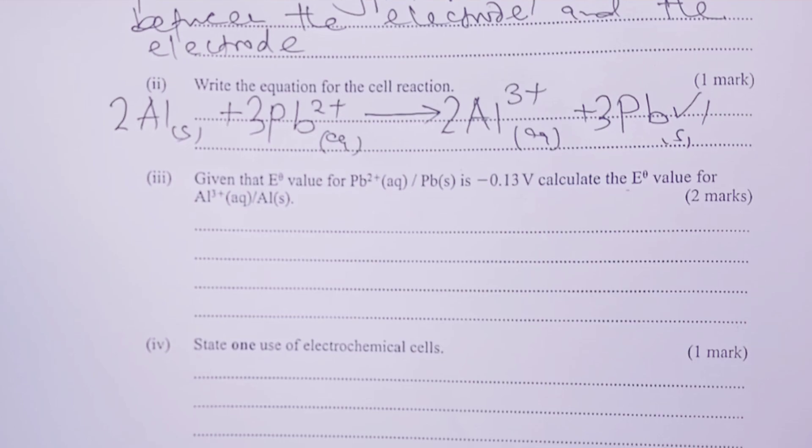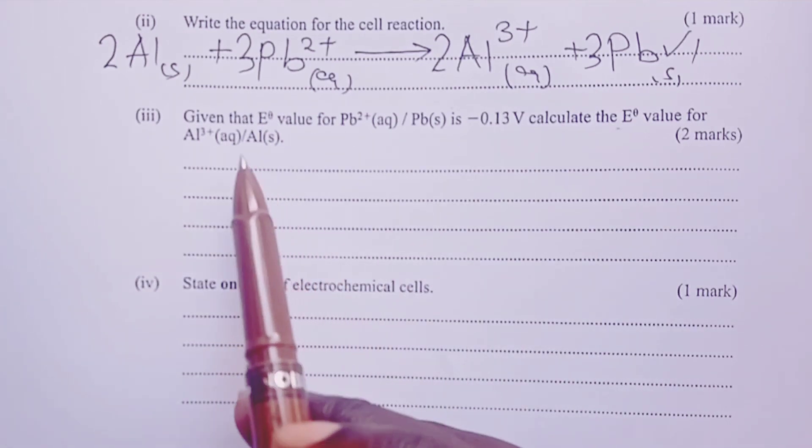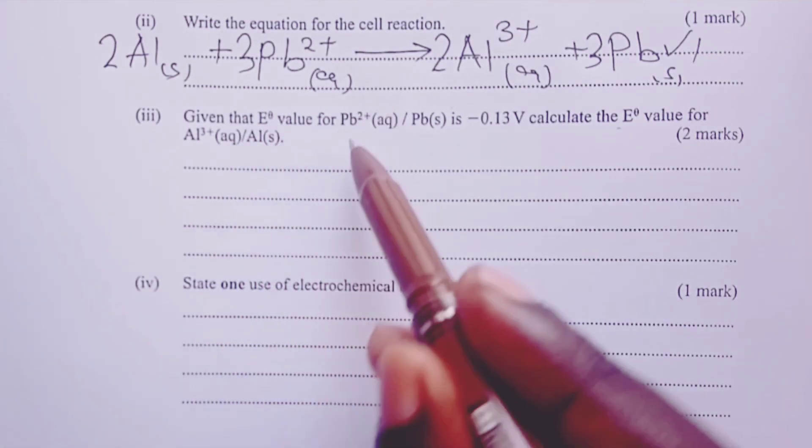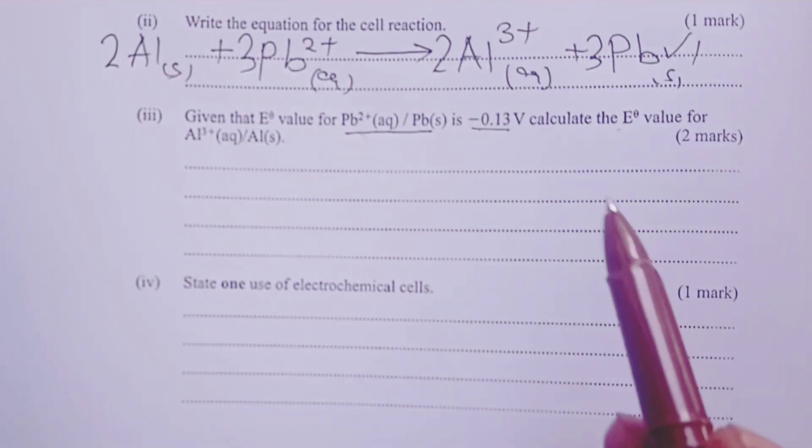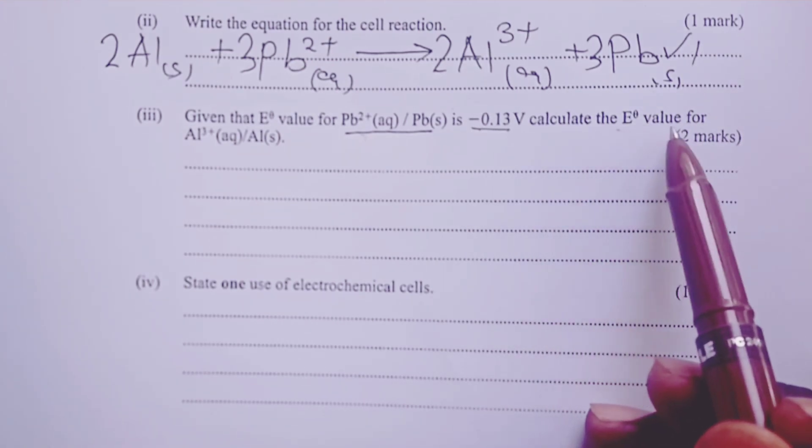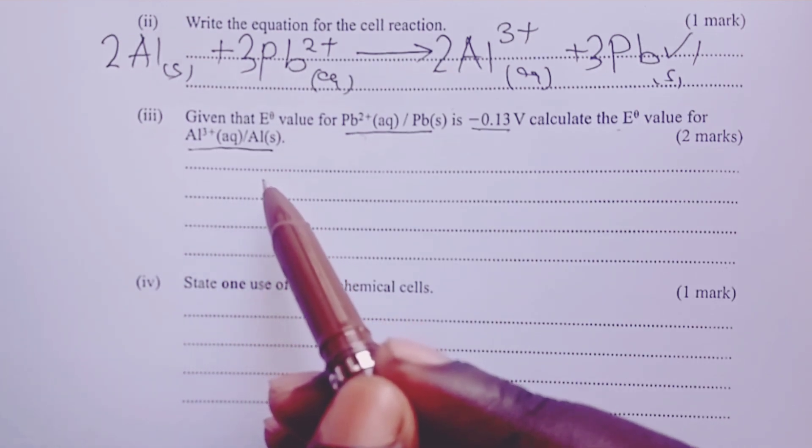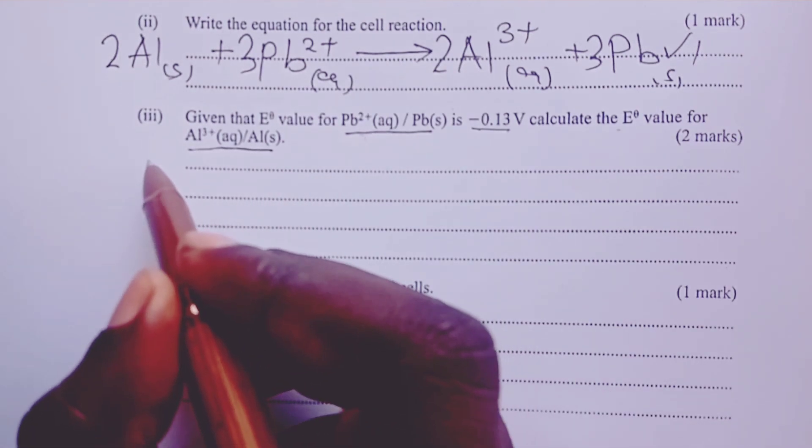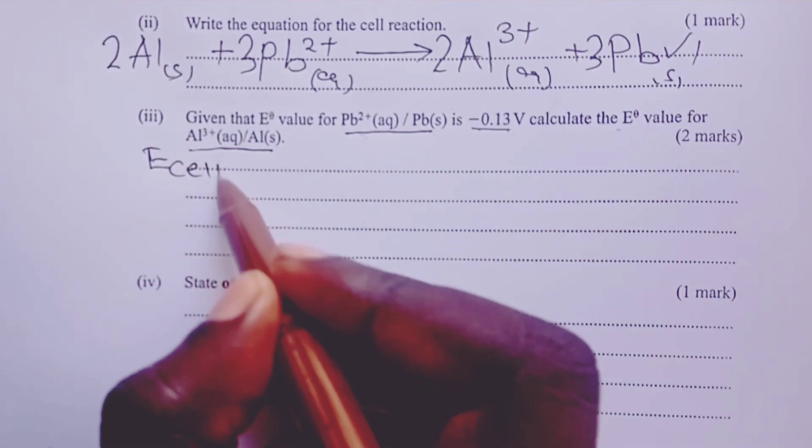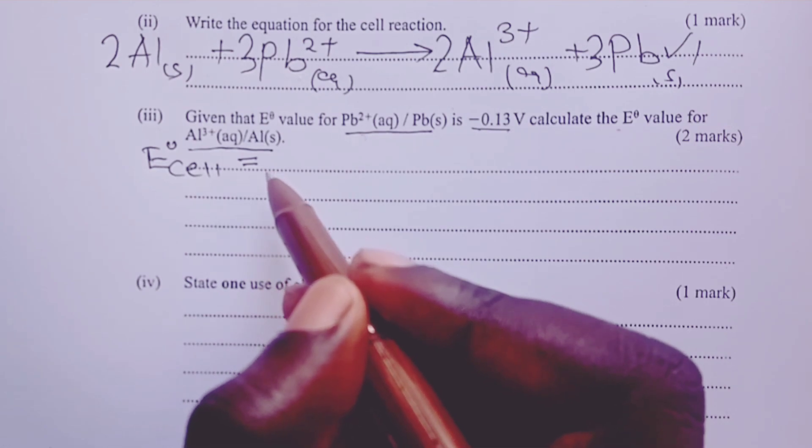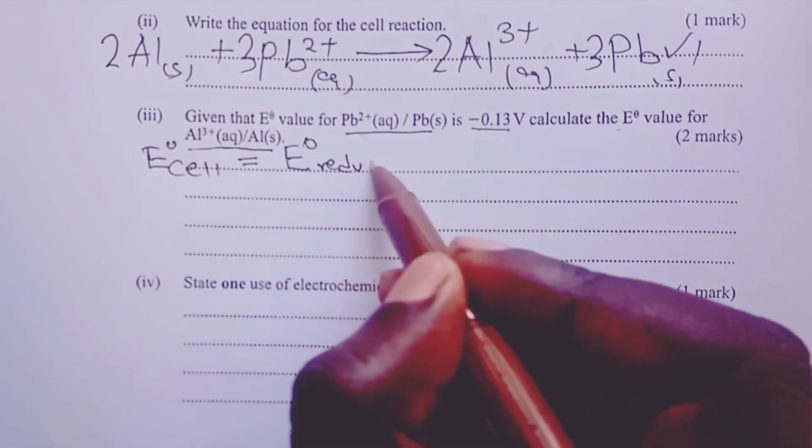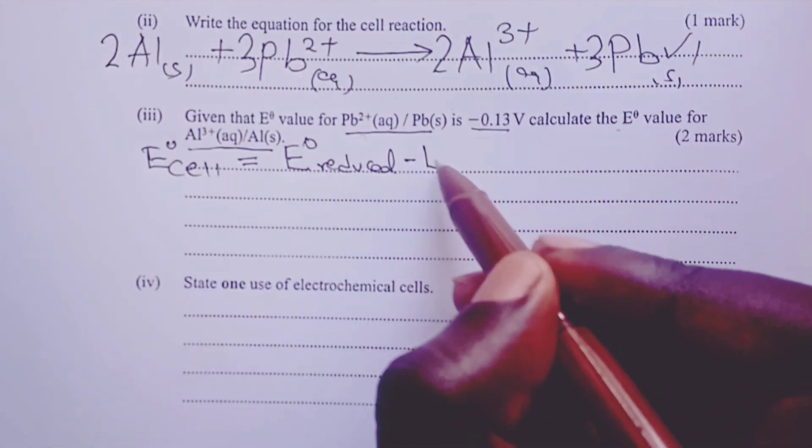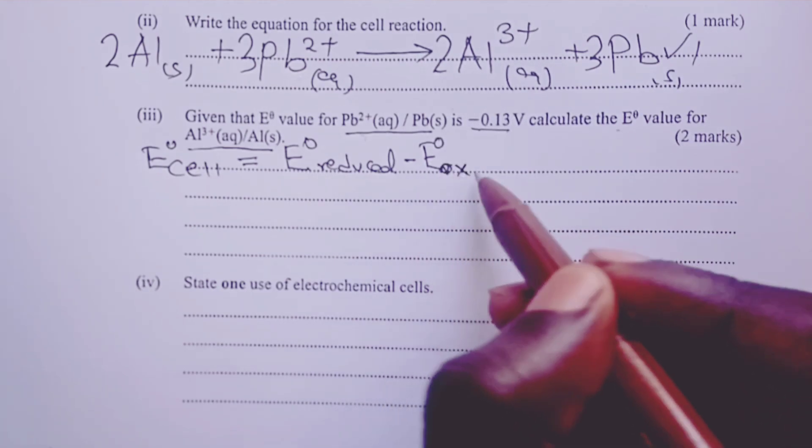To Roman 3 of question 3, we are told that given that E° value for the reduced species, the reduced half cell, that is lead Pb²⁺/Pb is -0.13V. We are then asked to calculate the E° value for the oxidized half cell, which is aluminum. So here, the only thing a candidate should have known is that E° of a complete cell is given by the E° of the reduced half cell minus E° of the oxidized half cell.